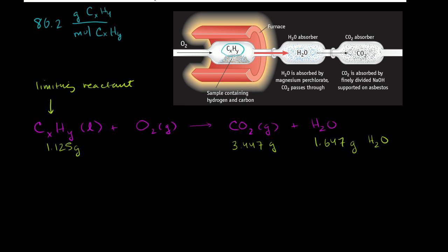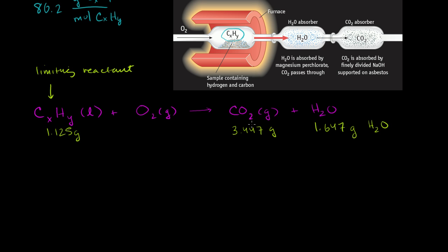To find the empirical formula, we figure out how many moles of carbon dioxide and water were produced, then determine how many moles of carbon and hydrogen atoms that represents. The ratio of carbons to hydrogens in the products must be the same as in the reactants, since all carbons and hydrogens came from the mystery hydrocarbon. A good place to start is figuring out how many moles of each product substance we have.